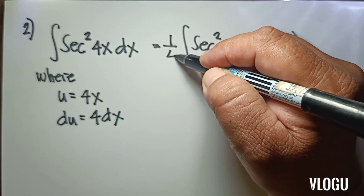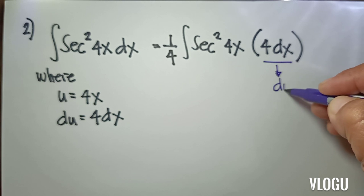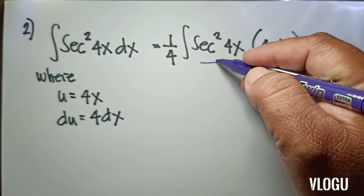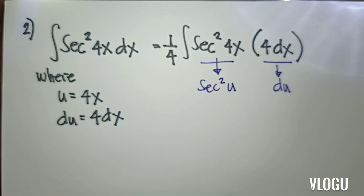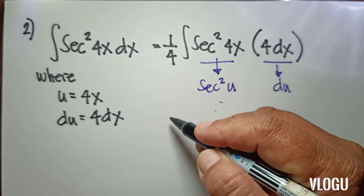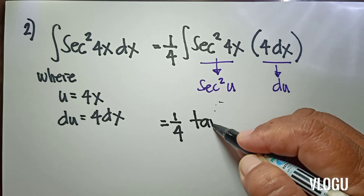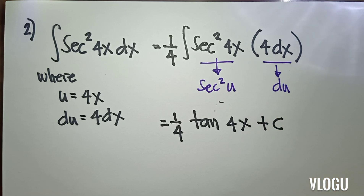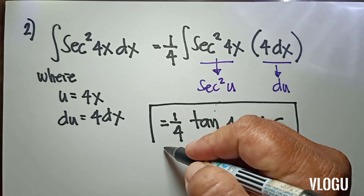So this is our du, and this is our sec² u. From our formula, we have the integral of sec² u du, which is equivalent to tangent u plus c. Therefore our final answer is 1/4 tangent(4x) plus c, because we have a complete form of the integral of sec² u du.